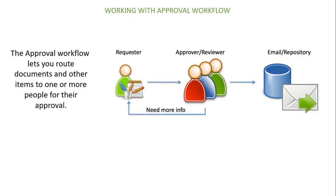There could be one or more approvers and reviewers at different levels of hierarchy, and the information flows from the requester to an approver or reviewer, and from one reviewer to the next subsequent stakeholders. In case the approver or reviewer needs more information, they can make that request back to the requester so that the requester can further furnish that information.